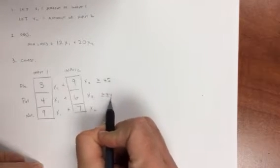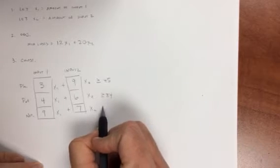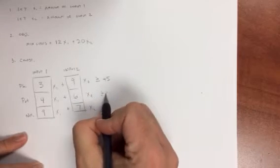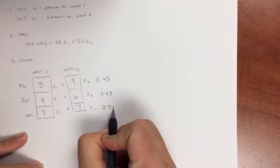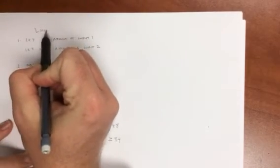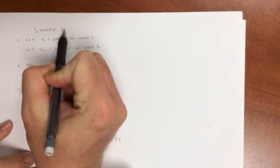So that tells me it's greater than or equal to 45 units of phosphates, 48 units of potash, and 84 units of nitrates. So this here is what we call our linear program.